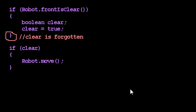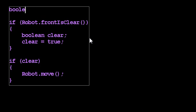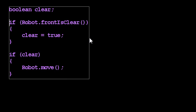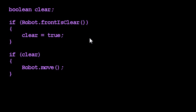So how can we fix that if we really did intend to use clear down here? Well, what if we declared it outside the if? Now it says: if the front is clear, assign true to clear, and if clear, move. Now Java will definitely have heard of the clear variable at this point in the program because clear is declared in the same block of code, and it hasn't died already.